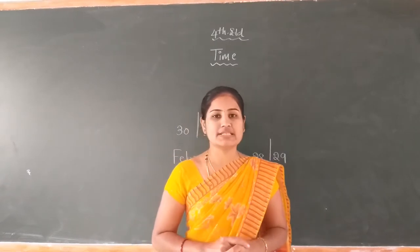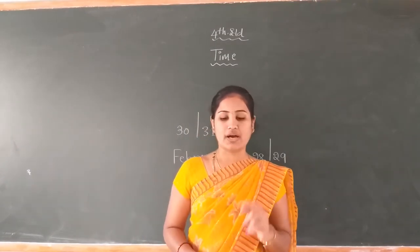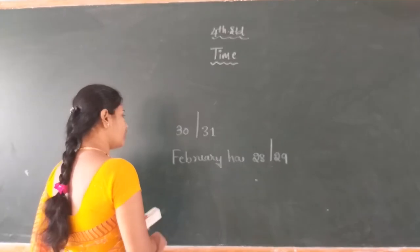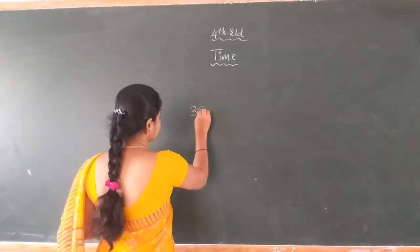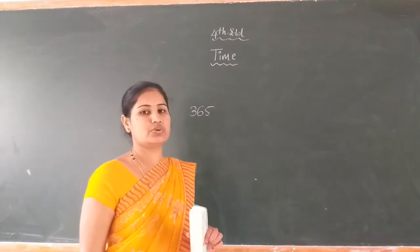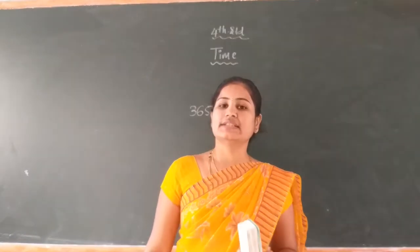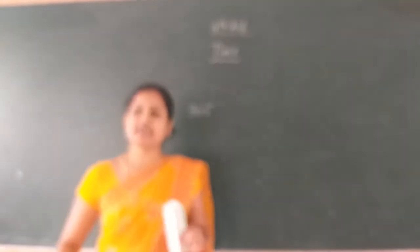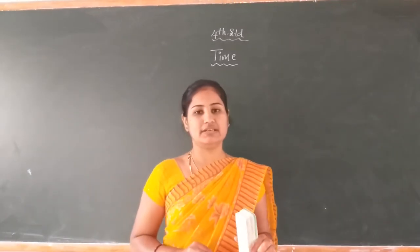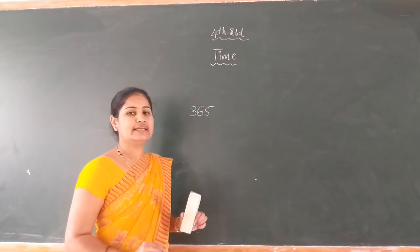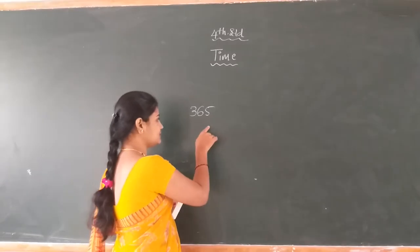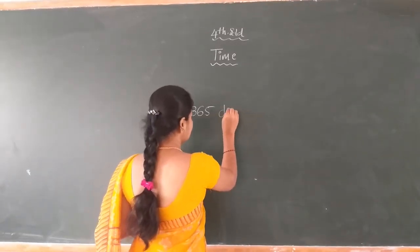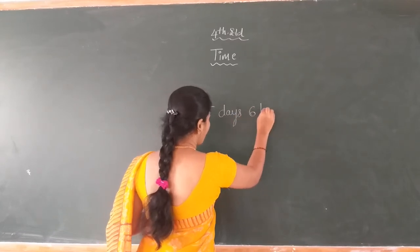There are 12 months present in 1 year. Dear student, how many days are in 1 year? The 1 year has 365 days. Accurately, 1 year has 365 days and 6 hours.